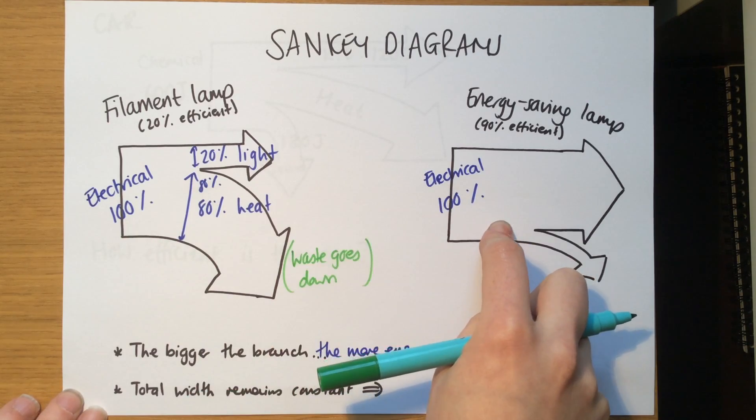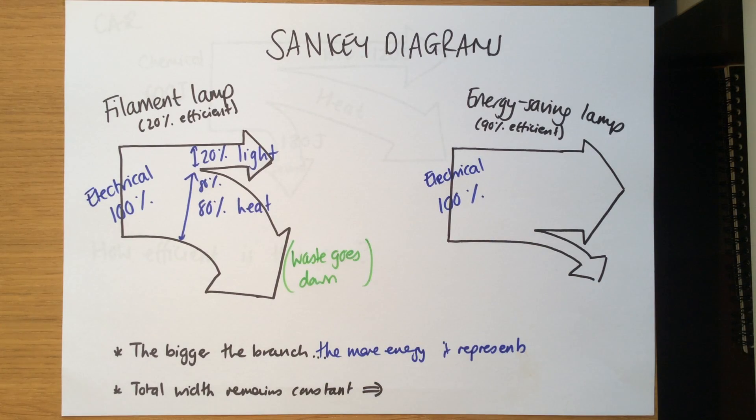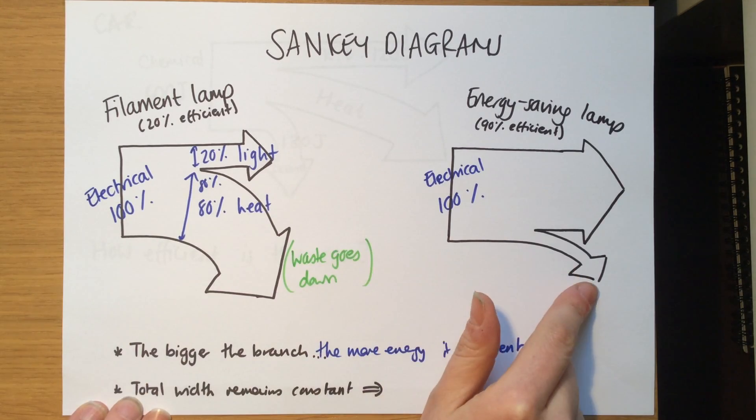If we compare the filament lamp to the energy saving lamp, we can see now already the difference between them. If the waste energy goes down we can see that one pointing down is much much smaller, so we know already that it wastes less energy.